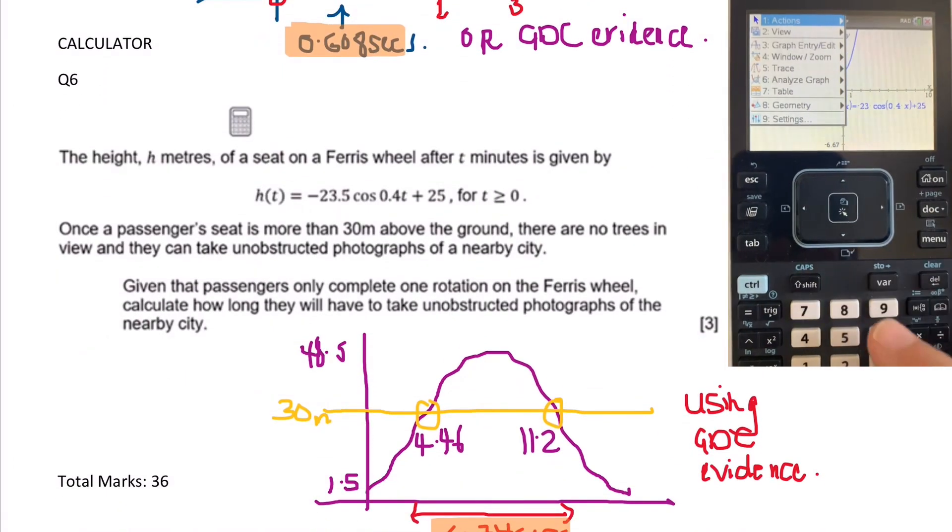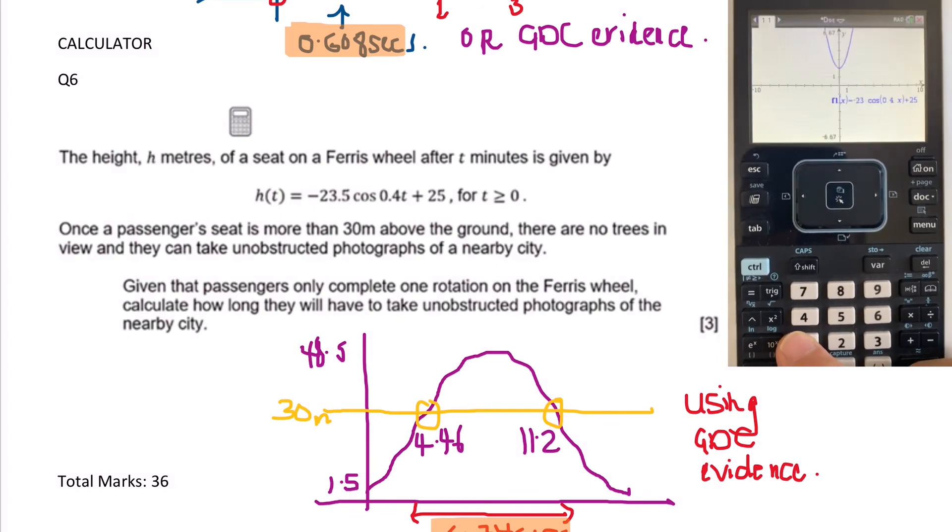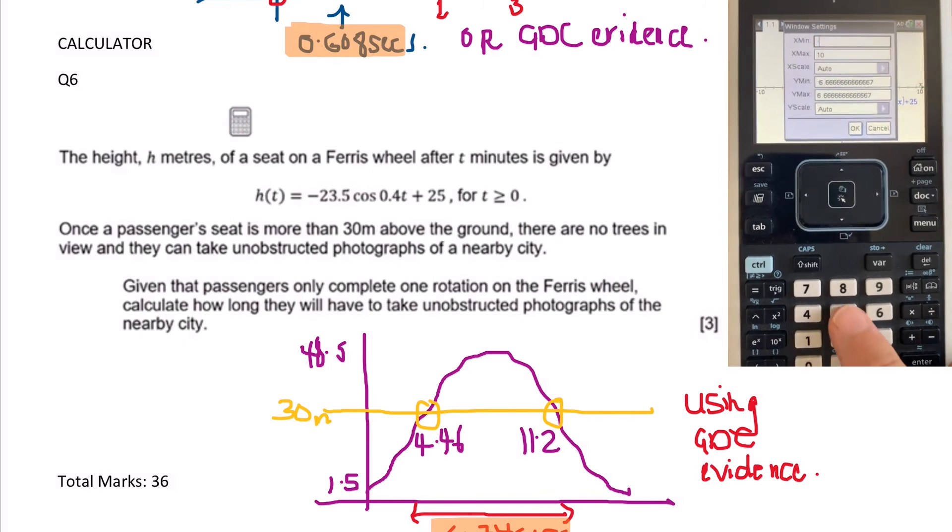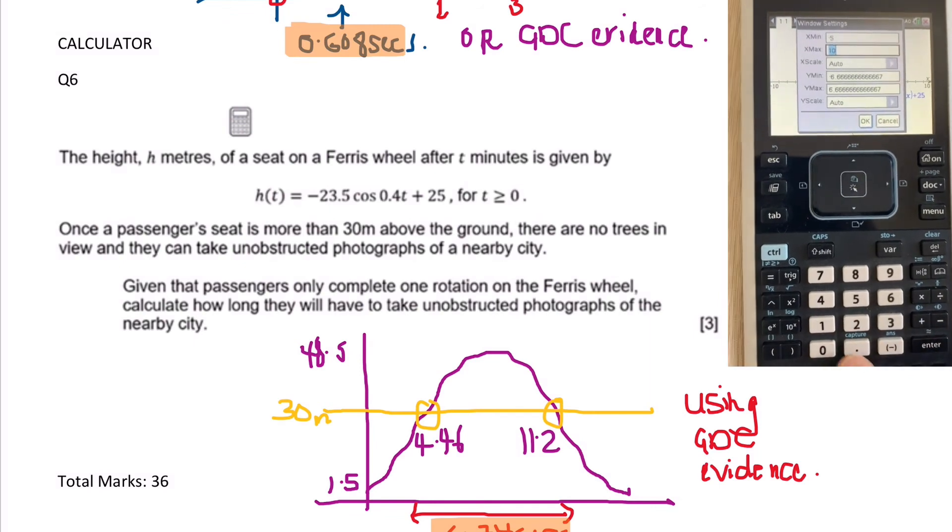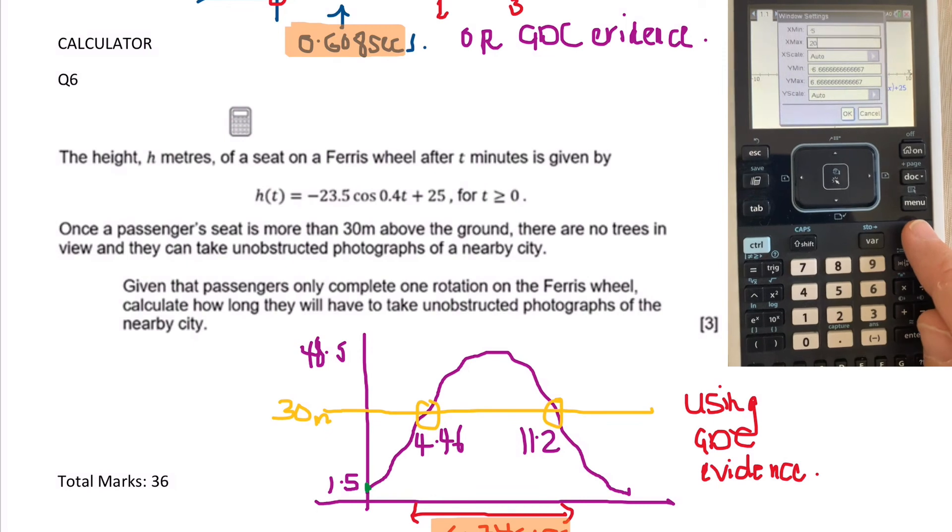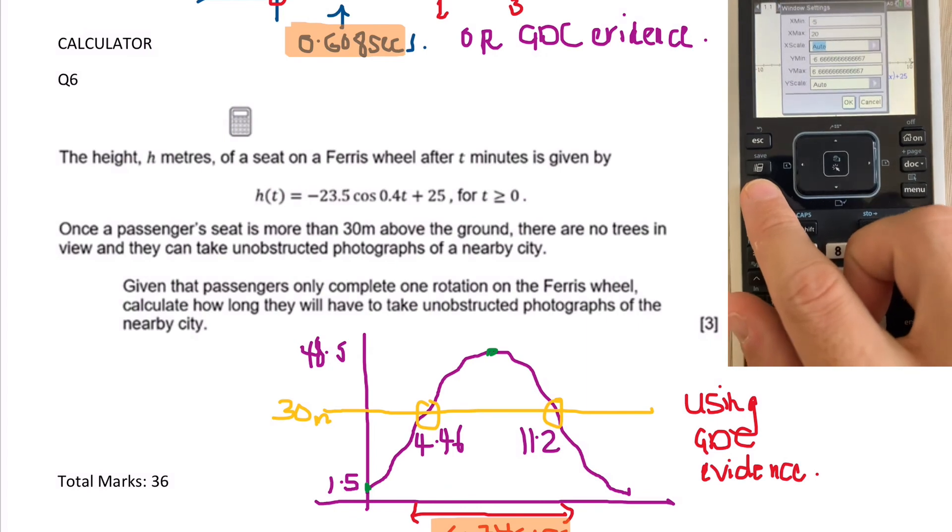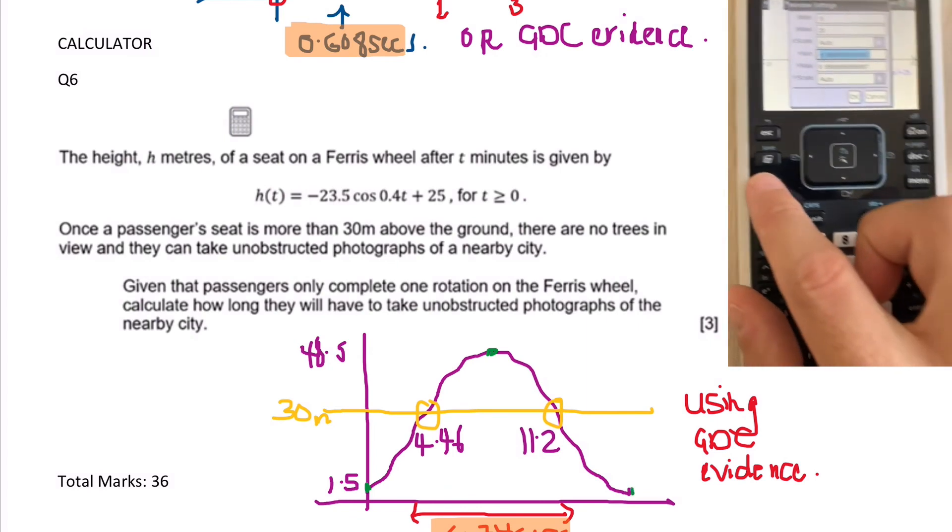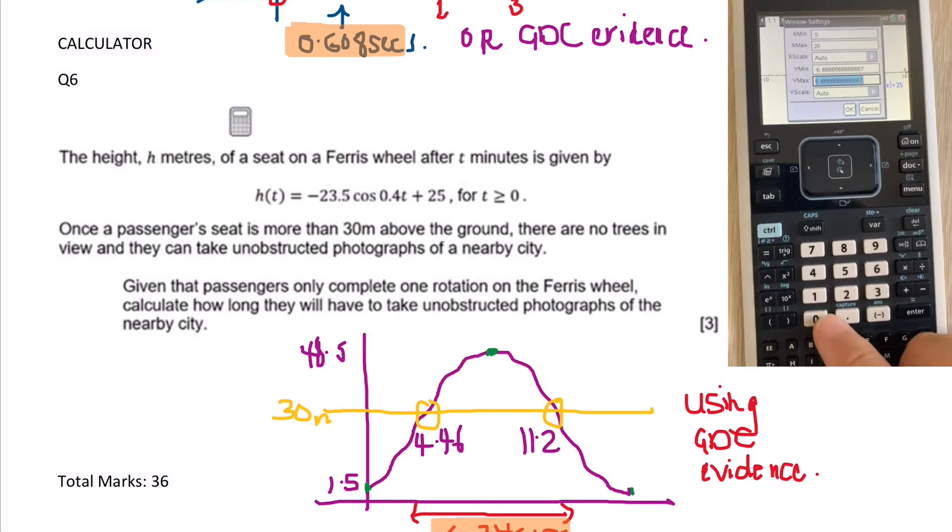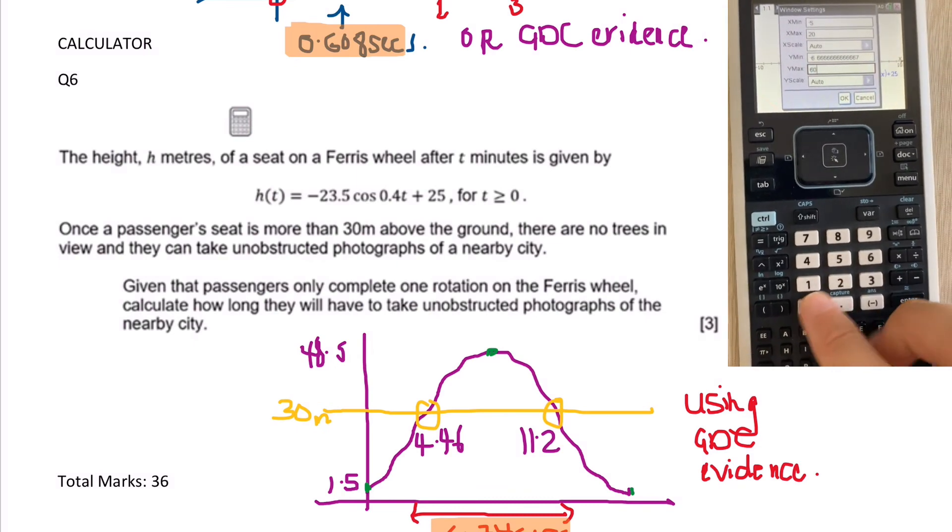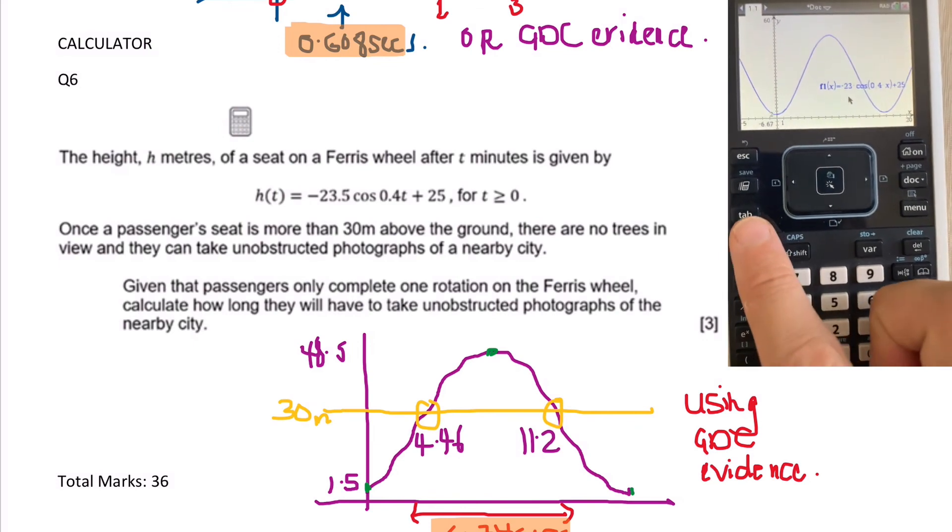Now calculator, again last question, three marks. It says the height, and that gives you the Ferris wheel function. So you would just enter that in. Be careful that it's a negative this time. So you can see on my graph down below that it starts at 1.5, goes all the way up to the maximum height, and then the Ferris wheel goes back to the beginning after one cycle. So it says given that the passengers only complete one rotation on the Ferris wheel, how long will they have to take unobstructed photographs when they go above the trees? Well it says that it's 30 meters.